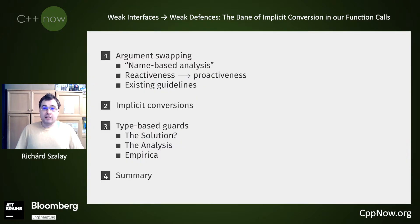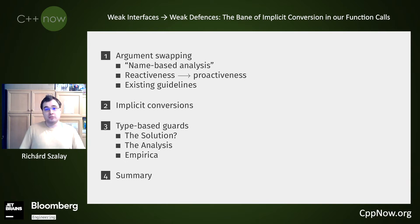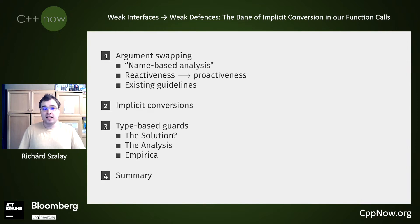What we will talk about: there will be a bit of definition about how the academic world and the literature has defined the problems that users can make when they misuse our functions. Then we will talk about implicit conversions — just a primer so we are on the same page. And then we will talk about what I call type-based guard — an improved solution over the existing name-based methods.